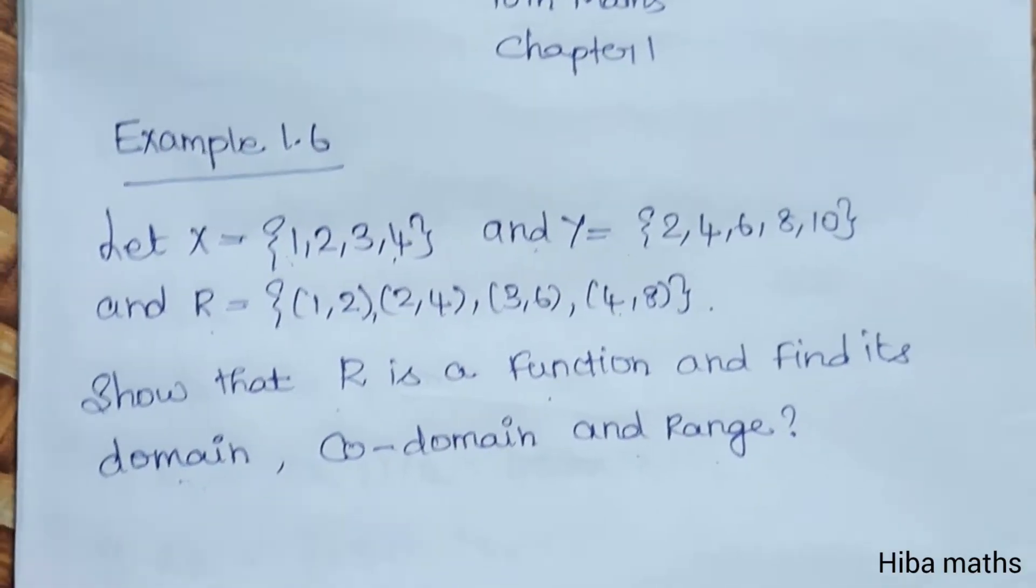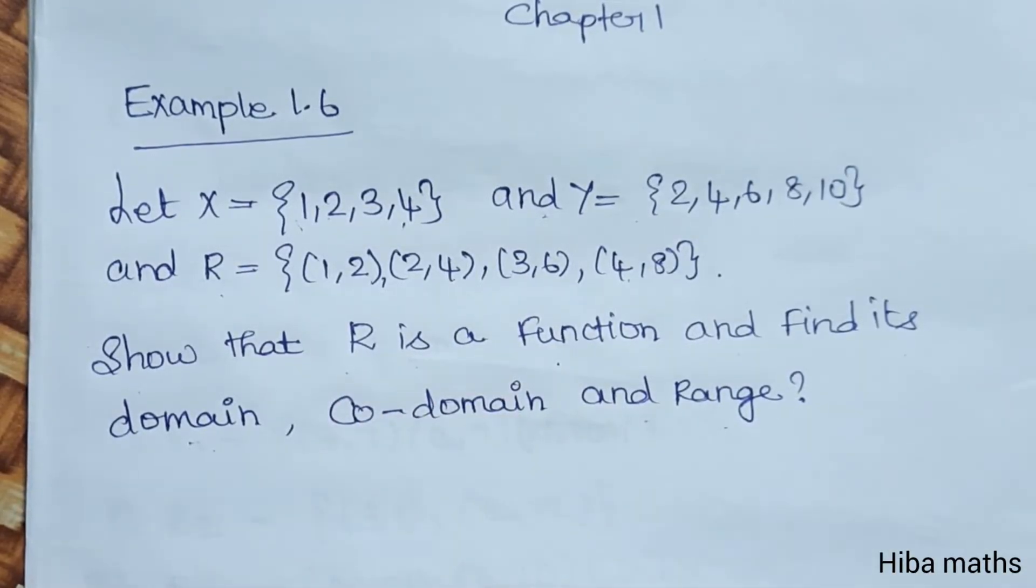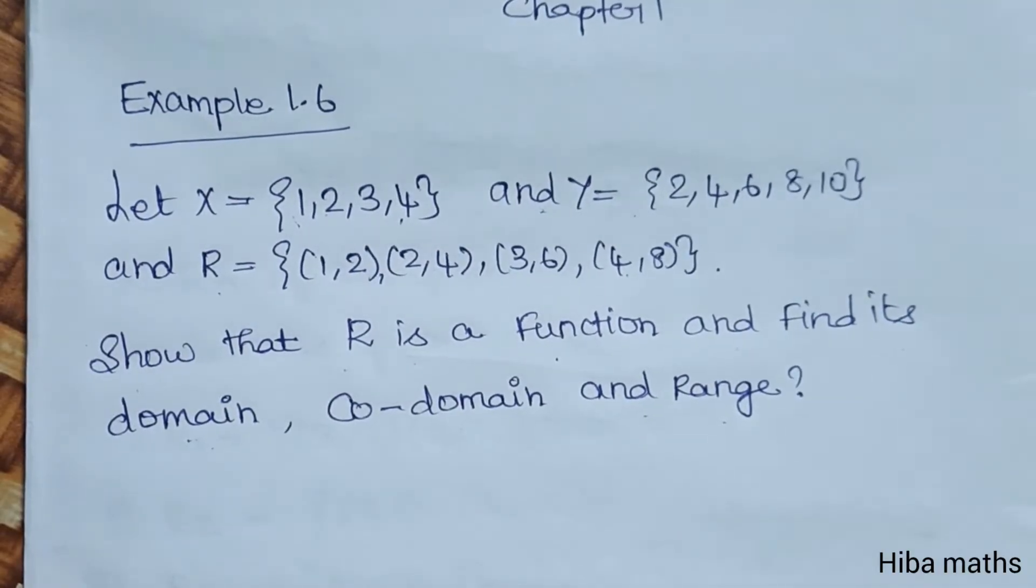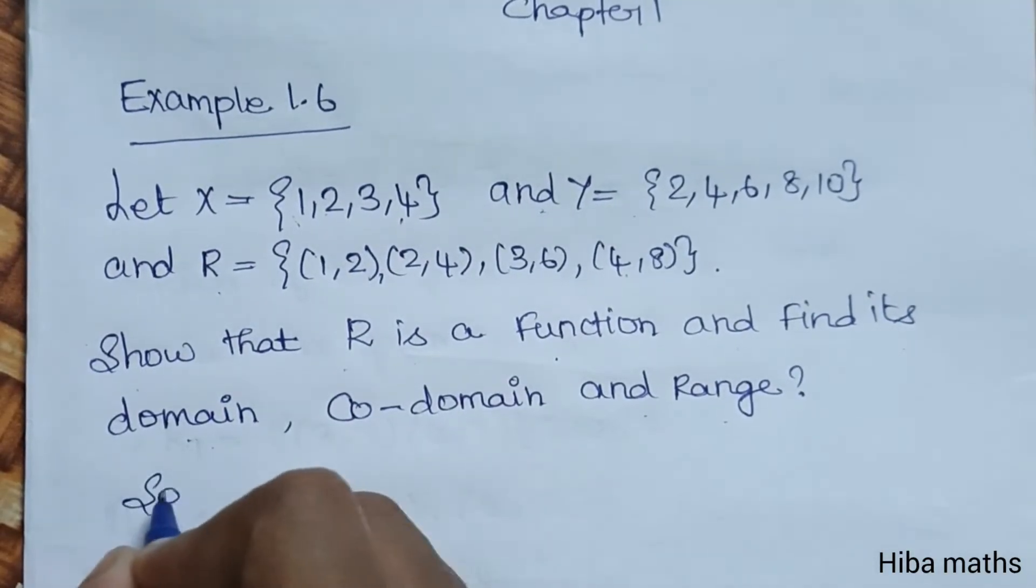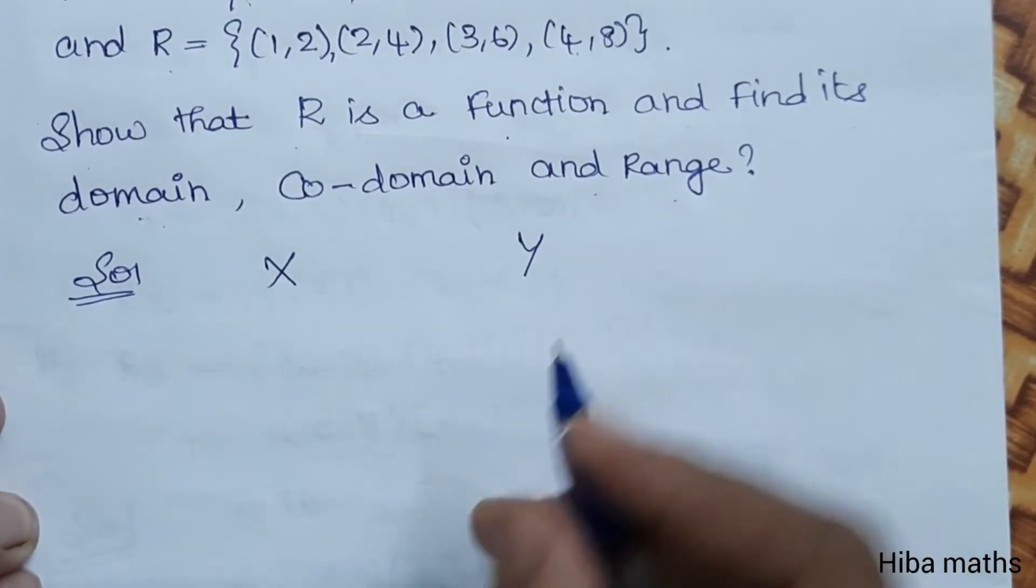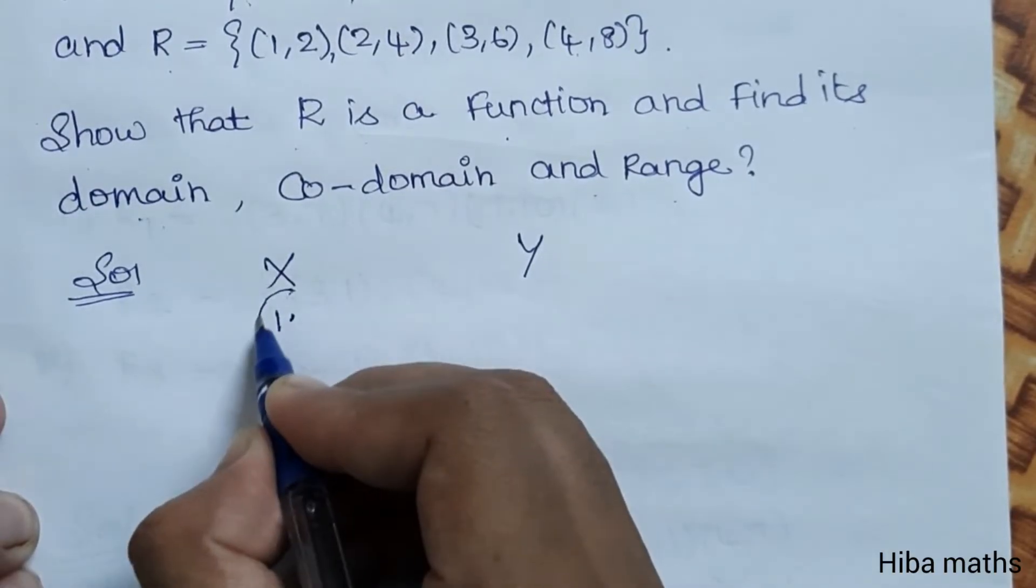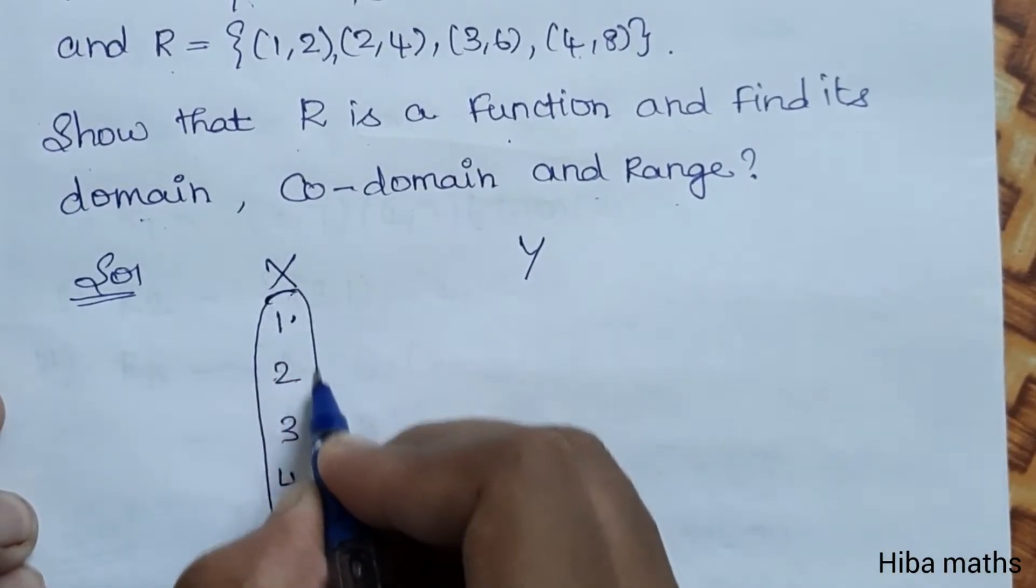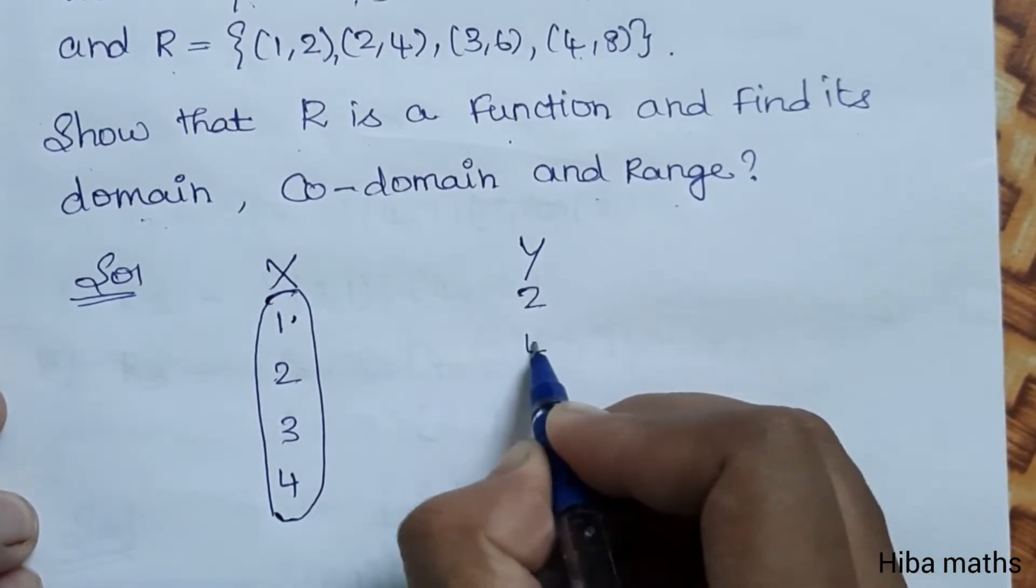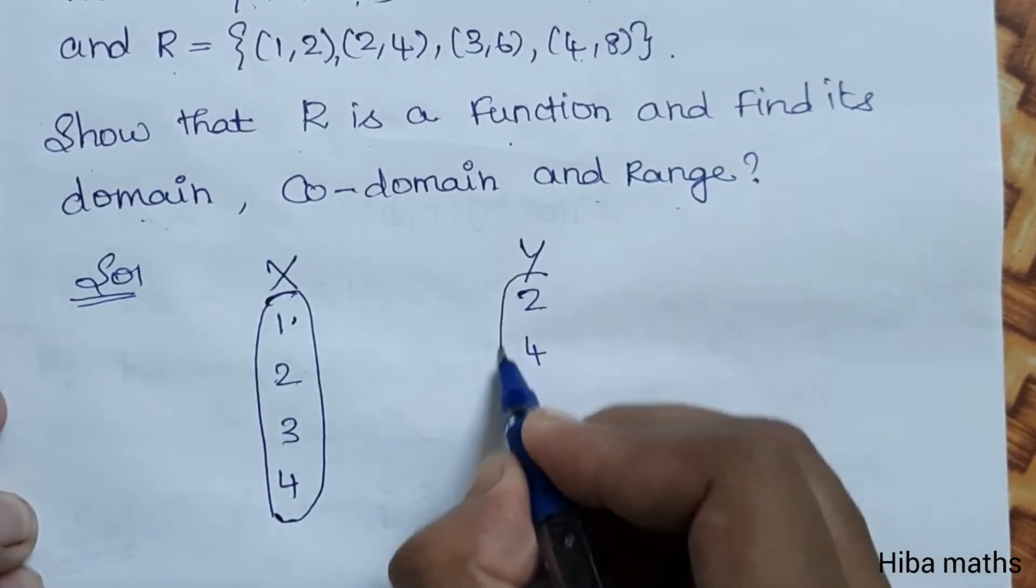Arrow diagram is best for this. X is a set and Y is a set. X is 1, 2, 3, 4. If you have a number, you will draw the arrow diagram. Y is 2, 4, 6, 8, 10.